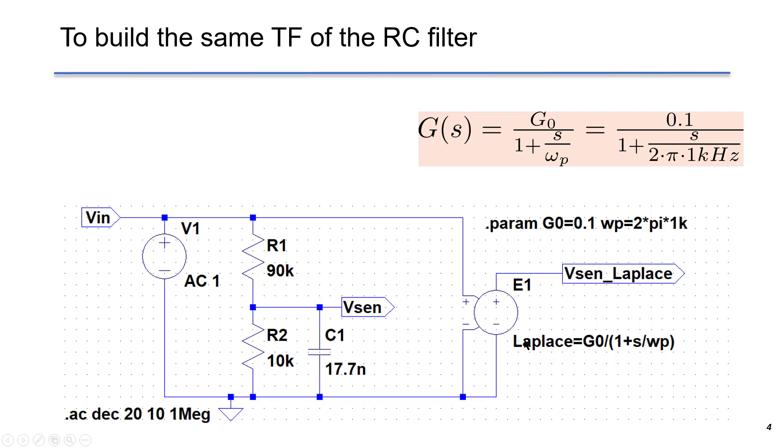Now we put E1 source here. The control terminals is connected to VIN and the negative terminal is connected to the ground. We want to duplicate the transfer function using the Laplace transform in the syntax here into E1. This is the transfer function we are going to build called G. We have DC gain G0 and one single pole Omega P.